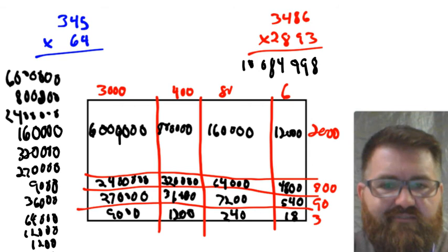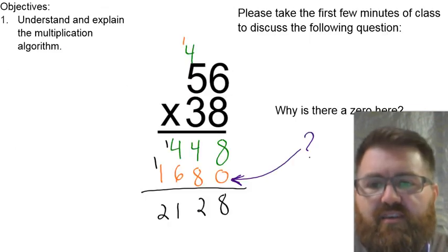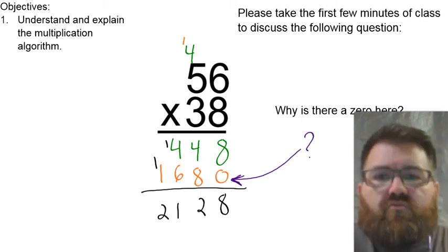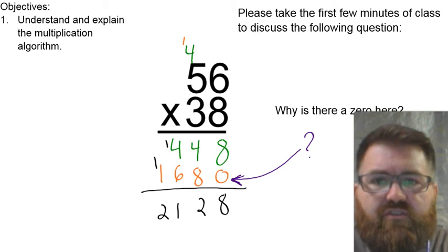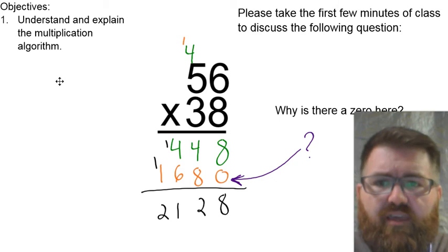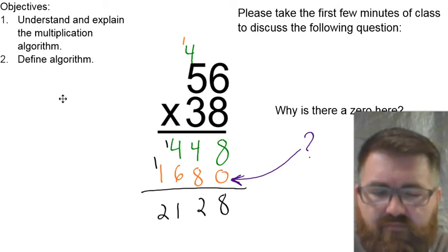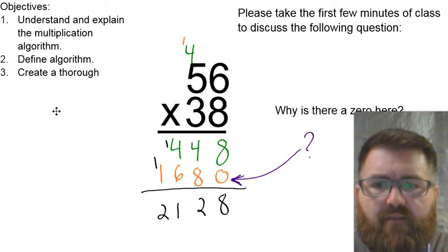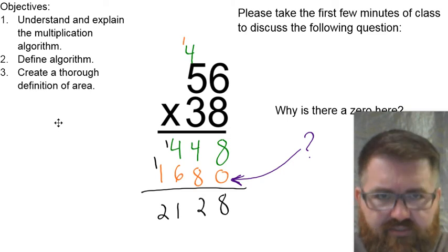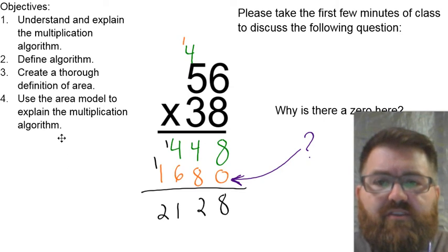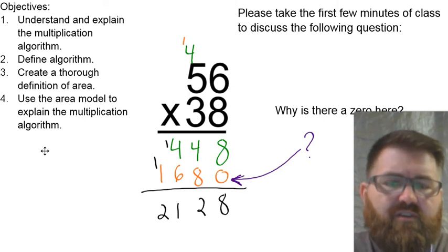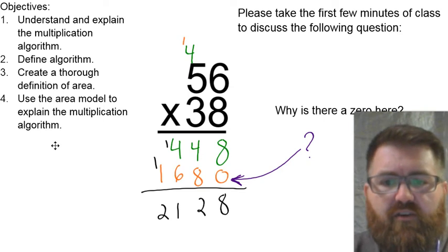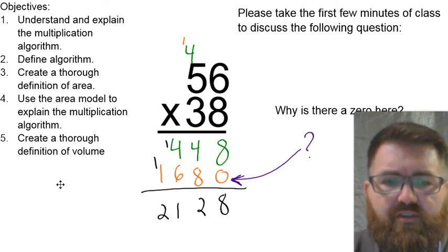Thanks for your patience with this less-than-ideal setup. Now that we've gone over those challenging problems, let's review what we've done in the past. Can we understand and explain the multiplication algorithm? Yes, absolutely. Have we defined algorithm? It's just a set of steps. Have we created a thorough definition of area? Absolutely — it's the number of squares that can fit inside a space. Can we use the area model to explain the multiplication algorithm? Yes.